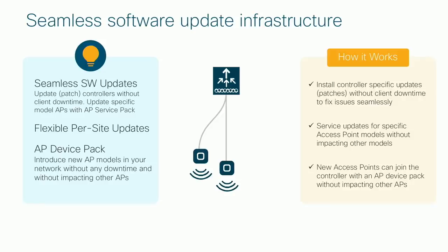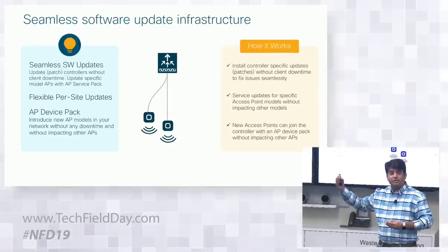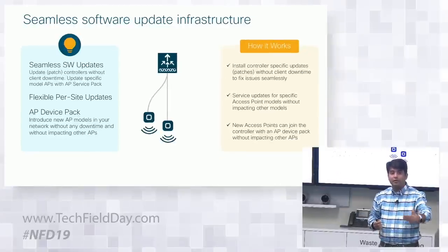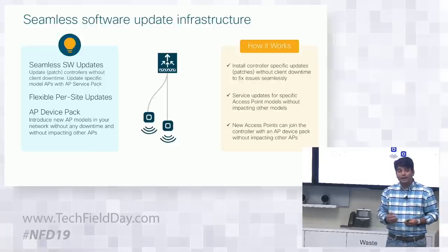Now this is what we're introducing new with Catalyst 9800 — seamless software-based updates on the infrastructure. In today's wireless network, if you hit an issue on your controller, you go to TAC, TAC reaches out to engineering, and then a new engineering image or MR image is produced. Then the customer plans an upgrade, upgrades the entire controller, and all access points get a new image — which brings downtime to your network.